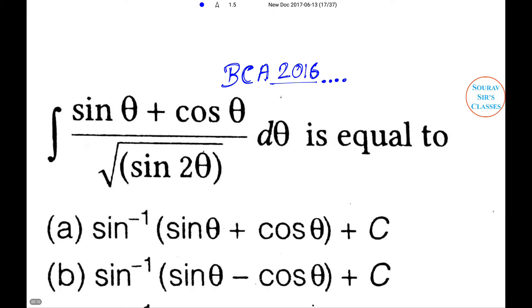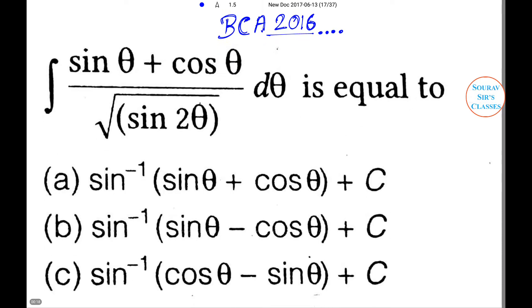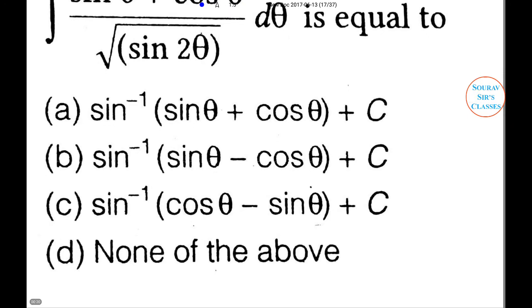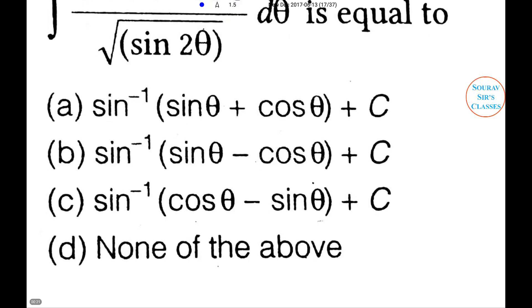Integrate (sin theta + cos theta) / sqrt(sin 2 theta) d theta. The four options are: A) sin inverse(sin theta + cos theta) + c, B) sin inverse(sin theta - cos theta) + c, C) sin inverse(cos theta - sin theta) + c, and D) none of the above.